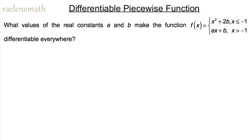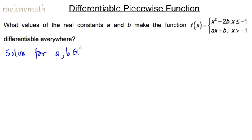So let's apply this information to our problem: what values of the real constants a and b make the function f differentiable everywhere? Because the piecewise function consists of a quadratic and a linear piece — both smooth everywhere — the only point on the domain we need to consider is at x equal to negative one. So we specifically restate the problem as: solve for a and b in the reals such that f is differentiable at x equal to negative one. We don't need to check other x-coordinates because polynomials are smooth and continuous everywhere.